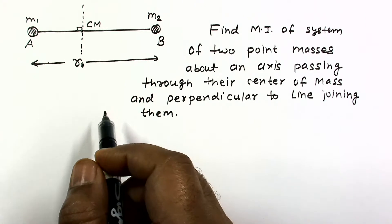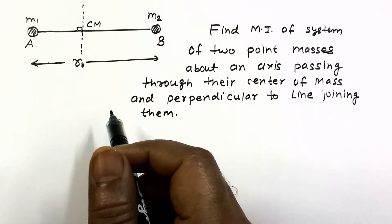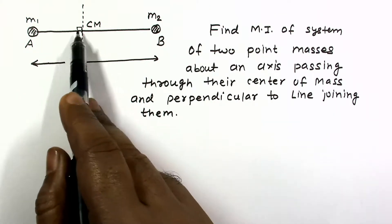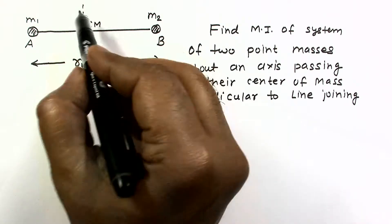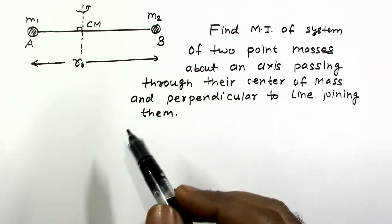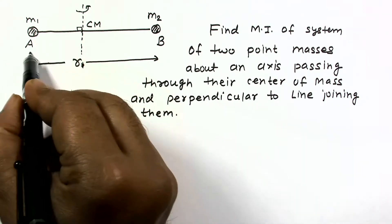So again, discrete particle system. What we need to know is each particle's individual perpendicular distance. The particle system is arranged along this axis and we need perpendicular distances to this axis.